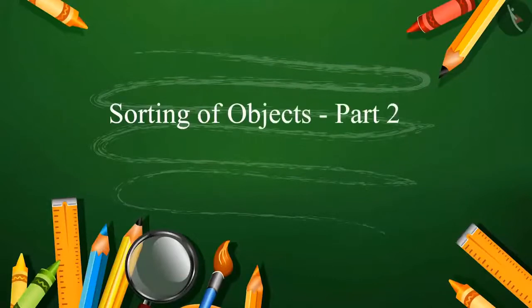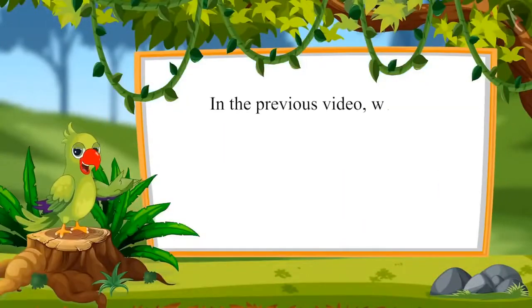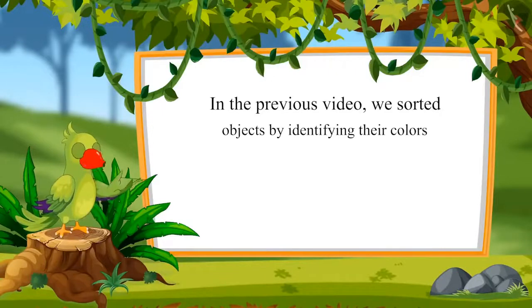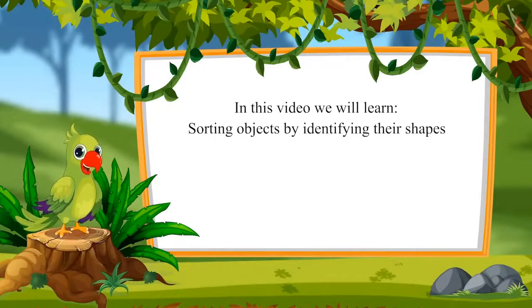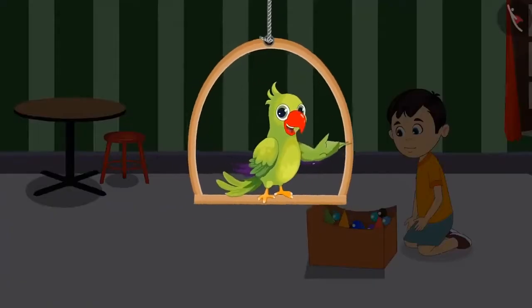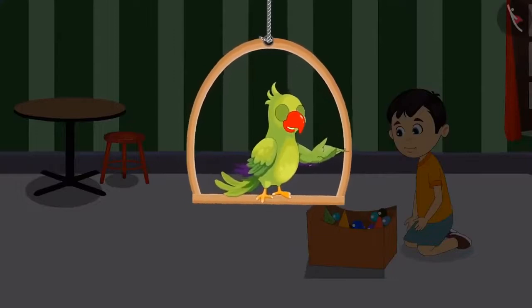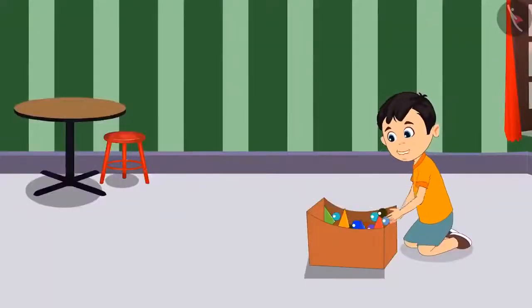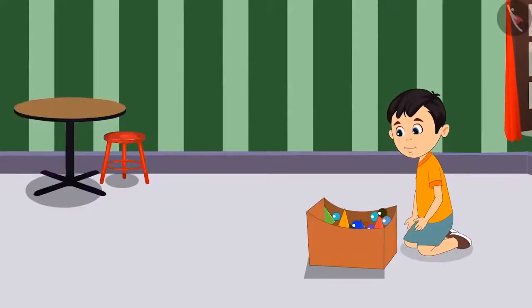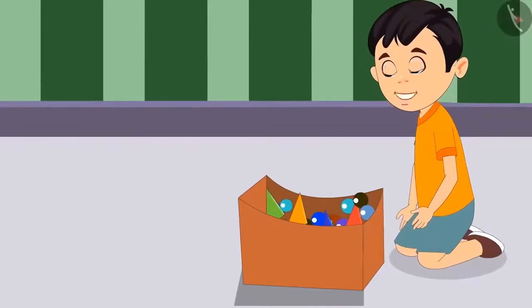Sorting of Objects, Part 2. Hello children. In the previous video, we sorted objects by identifying their colors. Today, we will learn sorting objects by identifying their shapes. Yesterday Chotu learned to sort things by colors. Today he remembered that his snake and ladder pieces and his marbles are kept together, so he thought of separating them. He said, 'I will sort all these pieces and marbles — oh, these are all of different colors! What do I do now?'